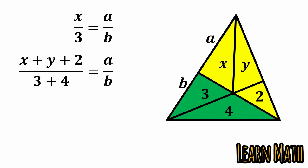And both equations are equal to a by b, so we can write like this. Simplify this and we will get this equation: 4x minus 3y is equal to 6. So let this be equation 1.